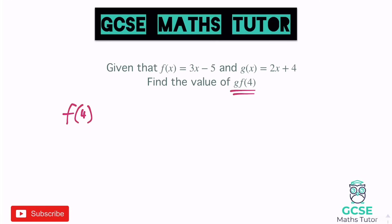So I'm going to work out f(4) to start with, which just means sub 4 into f. And if we sub 4 into f, we get 3 lots of 4, take away 5. And 3 lots of 4 is 12, take away 5, leaves us with 7. So when f is 4, we get the answer 7.